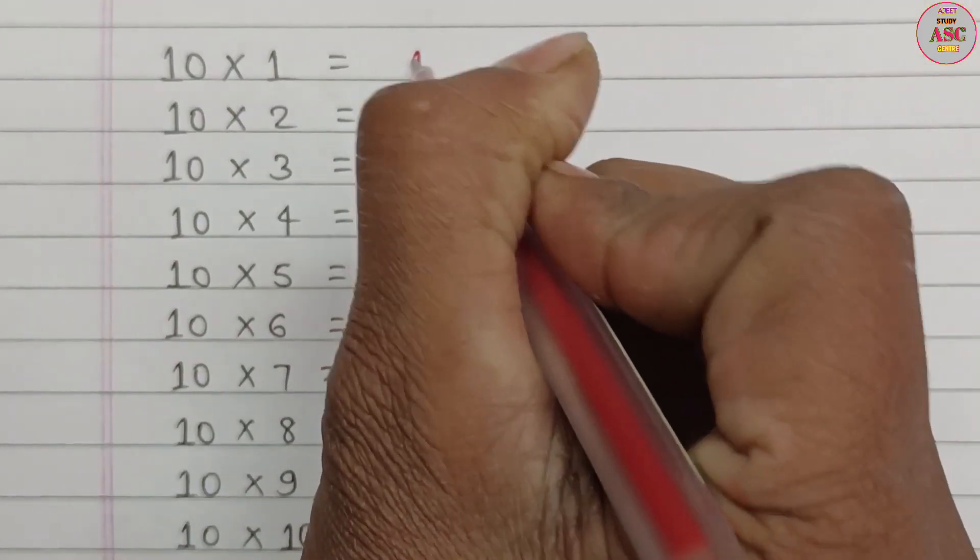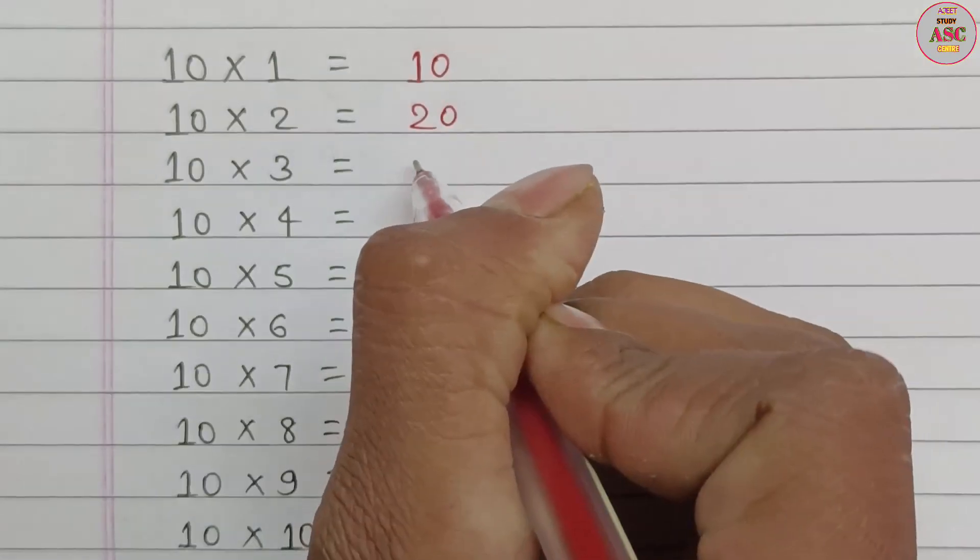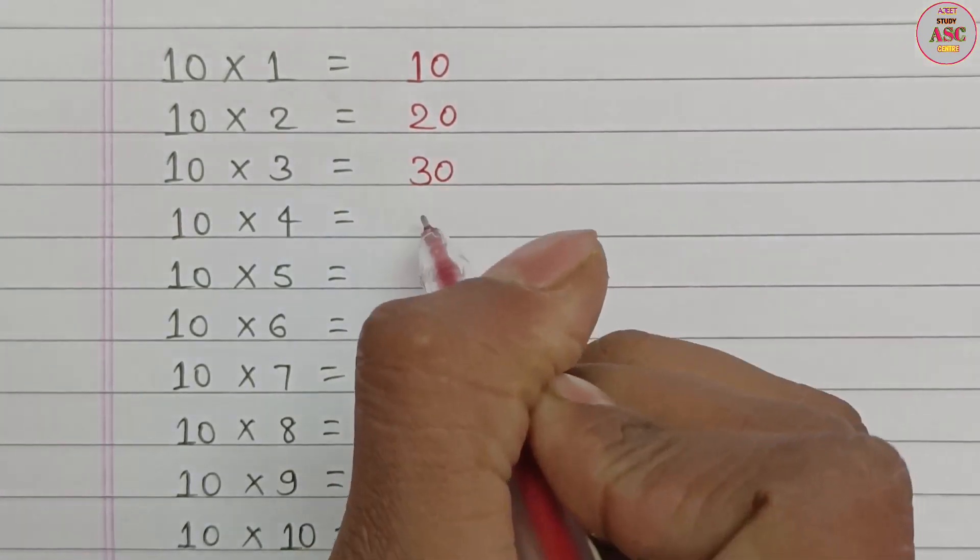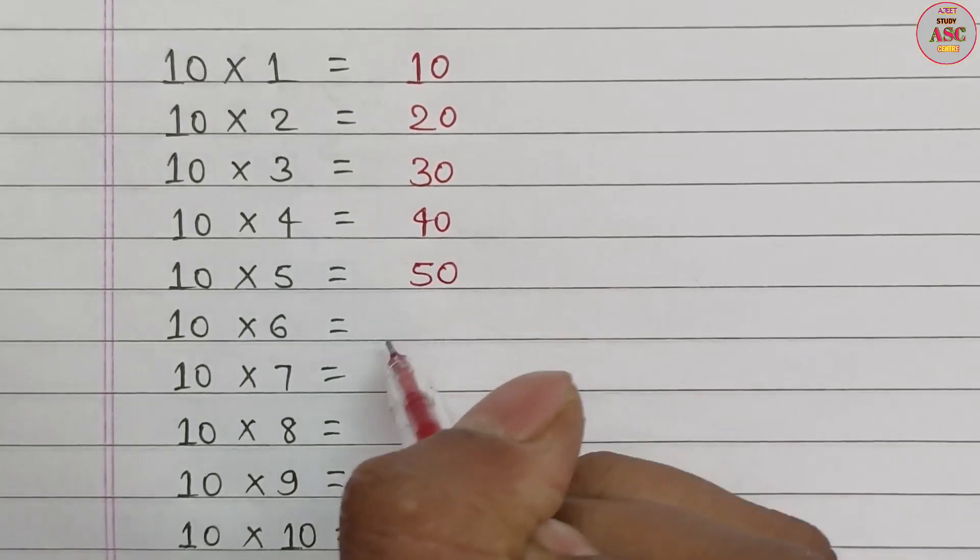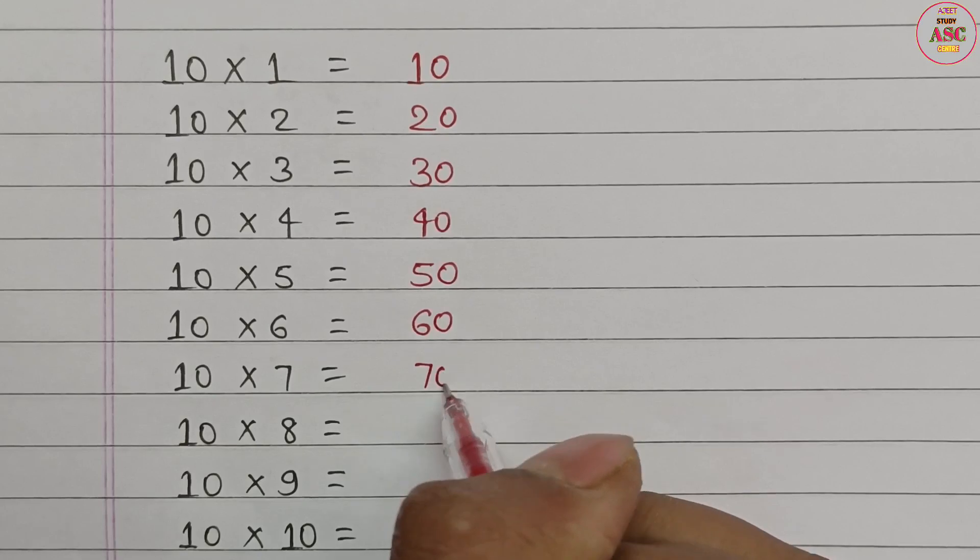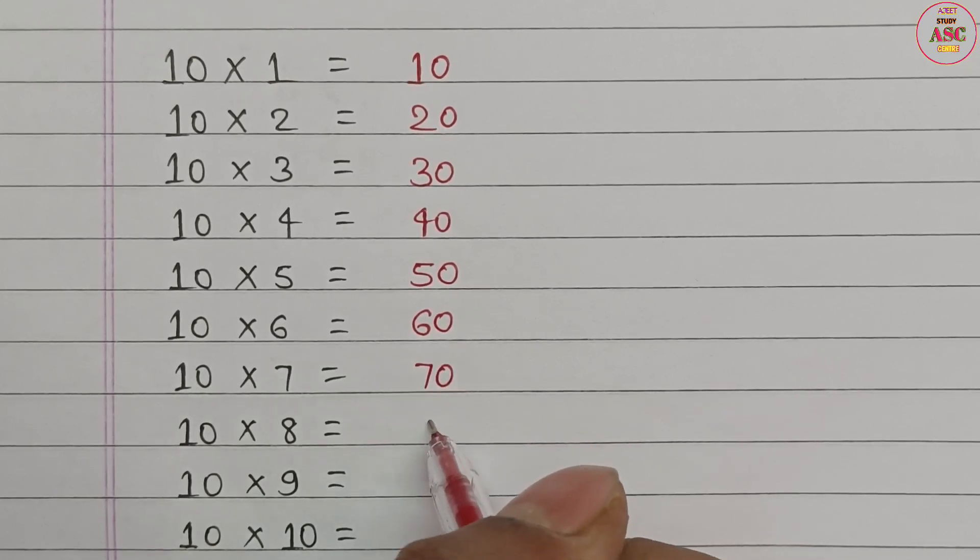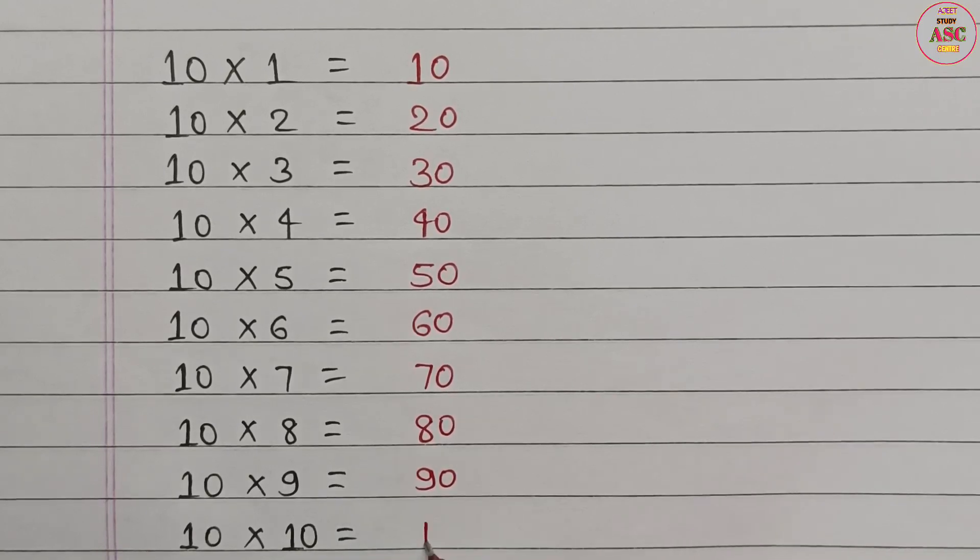10 times 1 equals 10. 10 times 2 equals 20. 10 times 3 equals 30. 10 times 4 equals 40. 10 times 5 equals 50. 10 times 6 equals 60. 10 times 7 equals 70. 10 times 8 equals 80. 10 times 9 equals 90. 10 times 10 equals 100.